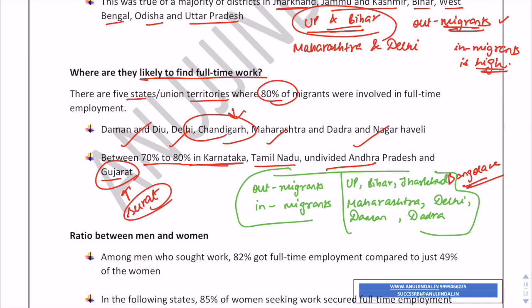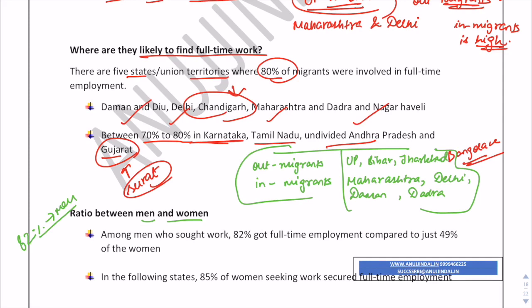Now dividing the migrant community by gender: 82% of men get full-time employment compared to women, who get only 49% full-time employment. There is a vast difference — 82% of men versus 49% of women getting full-time employment.